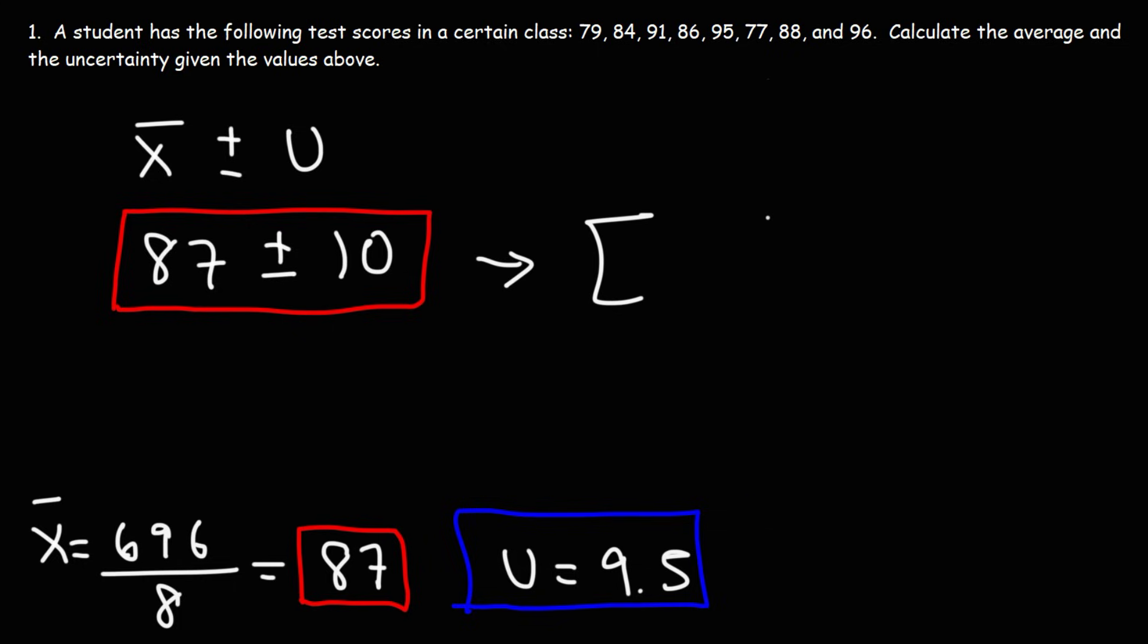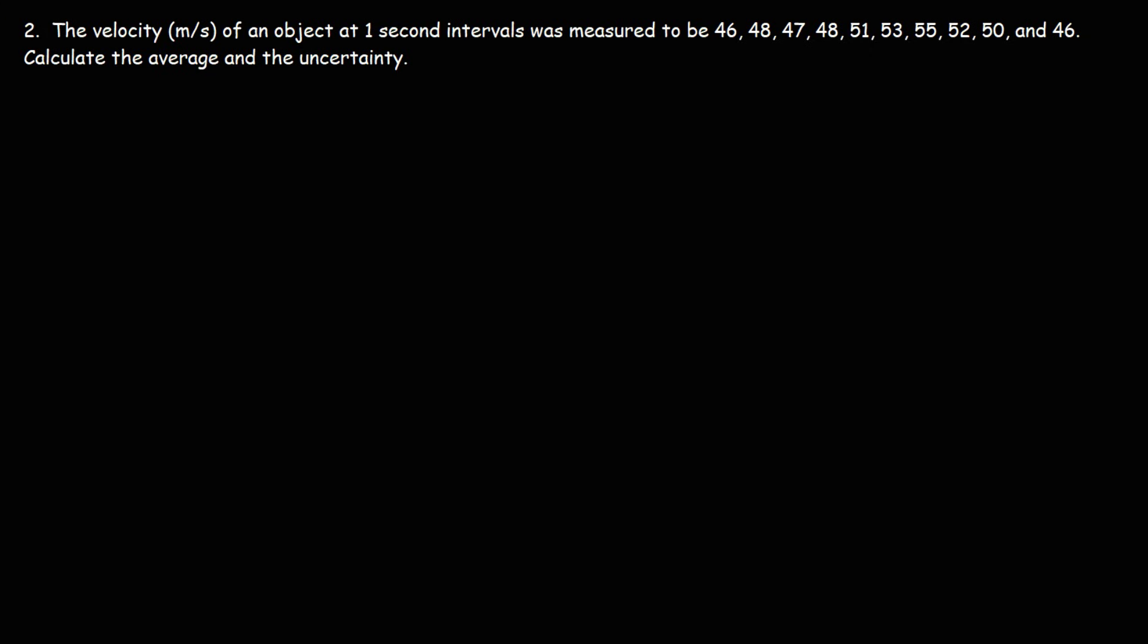And so this is going to be our answer. So 87 minus 10 will give us 77, which is the lowest number in the range. 87 plus 10 will go up to 97, which includes the highest number in the range. So all the test scores are in this range. But this is our final answer. This includes the mean with the uncertainty.